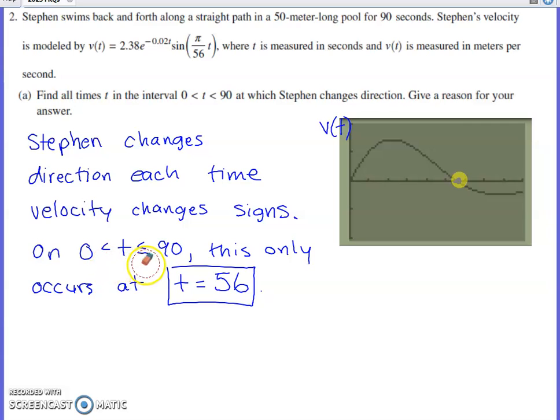As we were reading the problem statement, I noticed they didn't include the end point. So Stephen changes direction anytime velocity changes signs. That only happens at t equals 56. I didn't solve an equation by hand to get t equals 56. I already had this graphed on the calculator, so I just found the zero on the calculator.